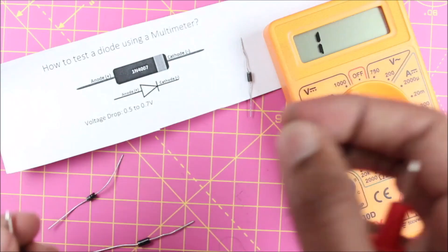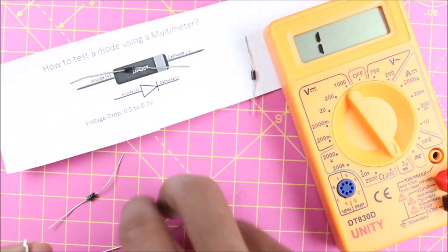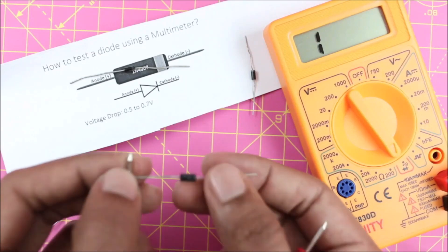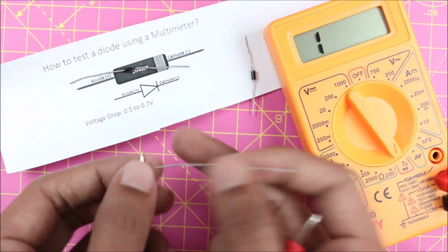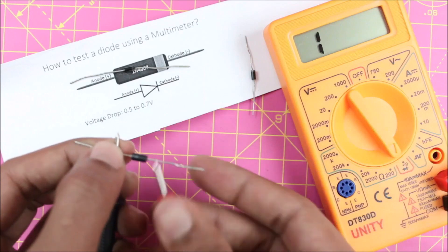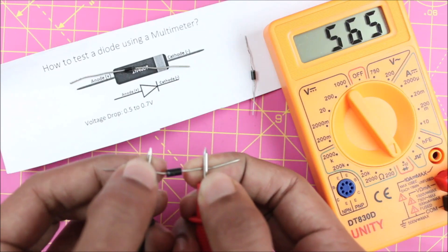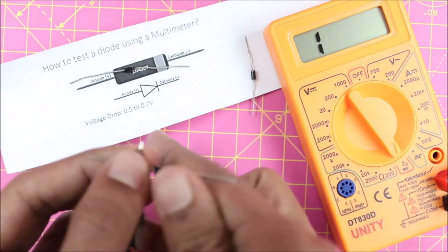Now let me again demonstrate with another diode. Find out the cathode terminal, place your black probe on the cathode terminal and the positive probe on the anode terminal. You will get a voltage drop between 0.5 volts to 0.7 volts. Swap the diode, measure it again, and you should get one volts. That means the diode is working.